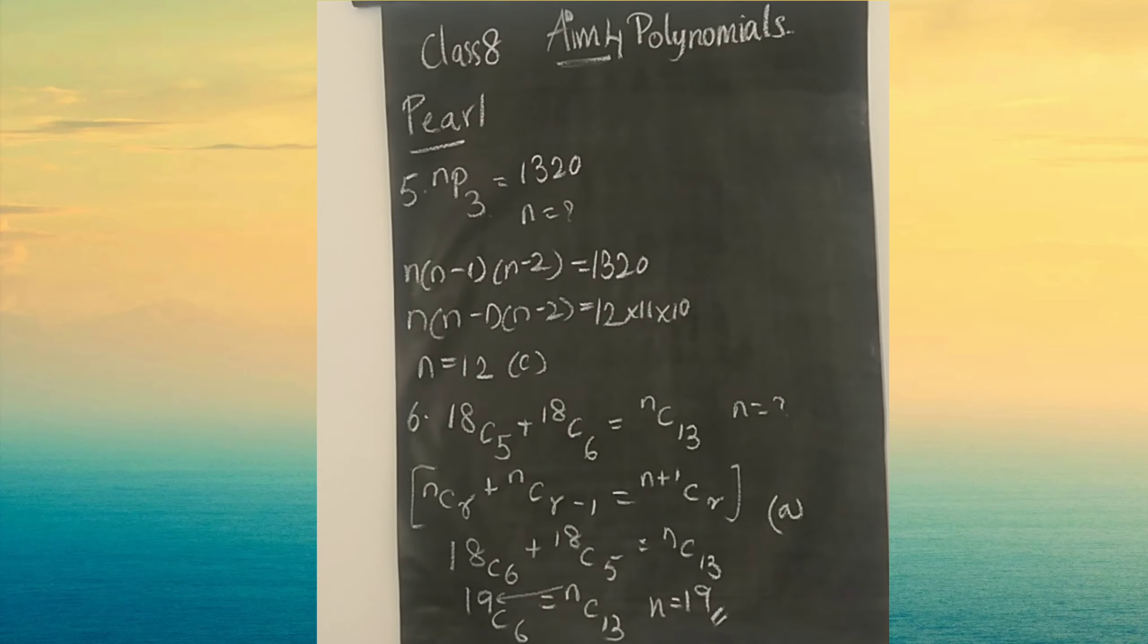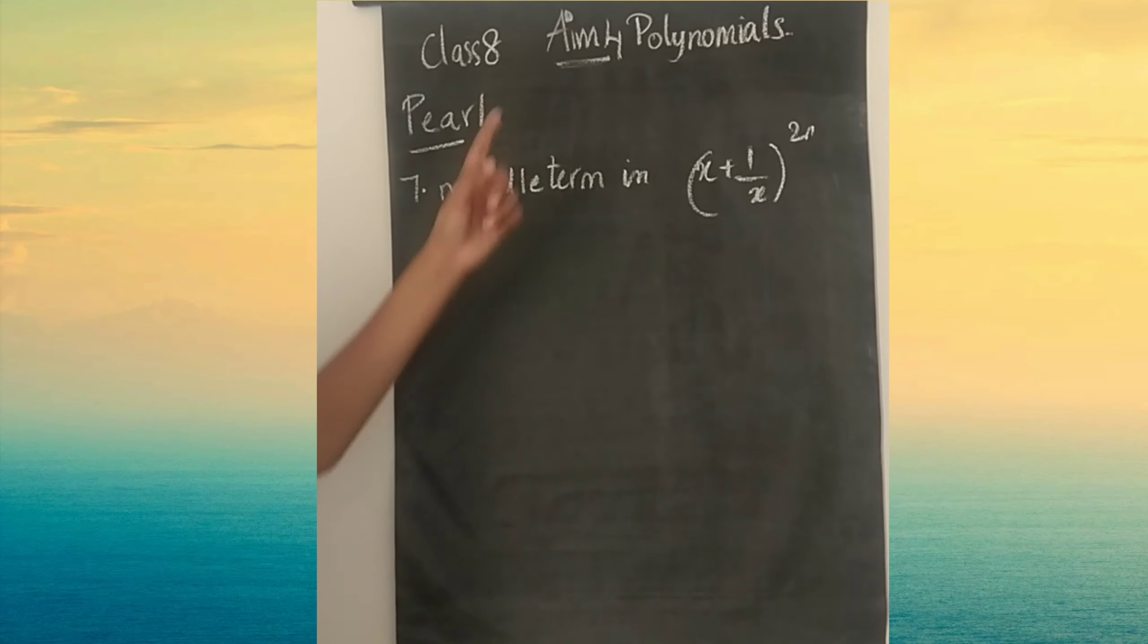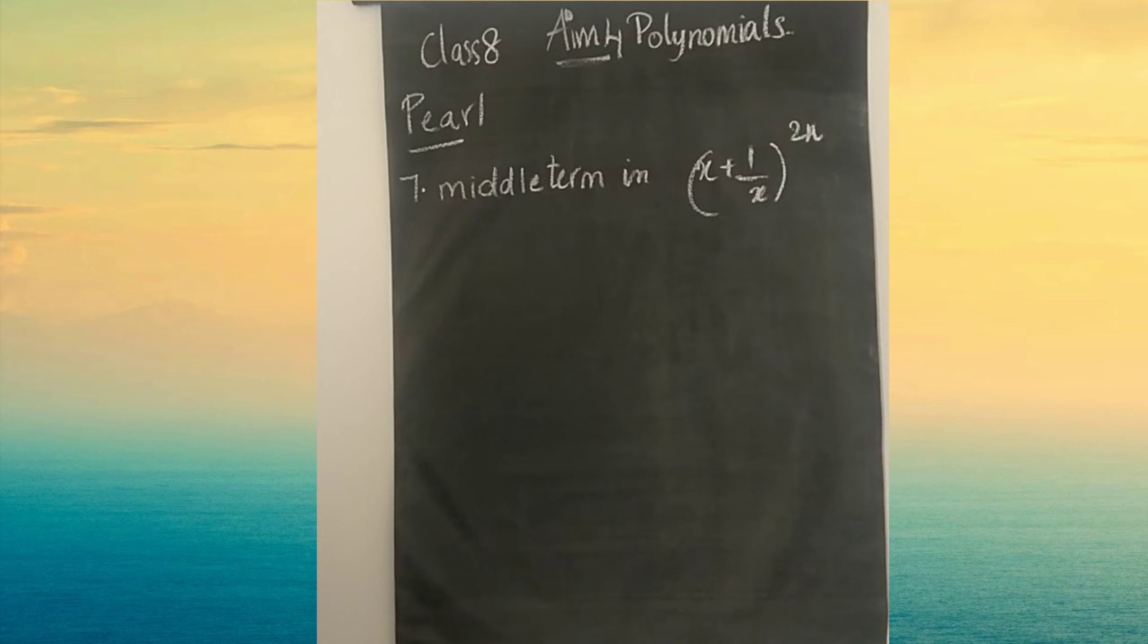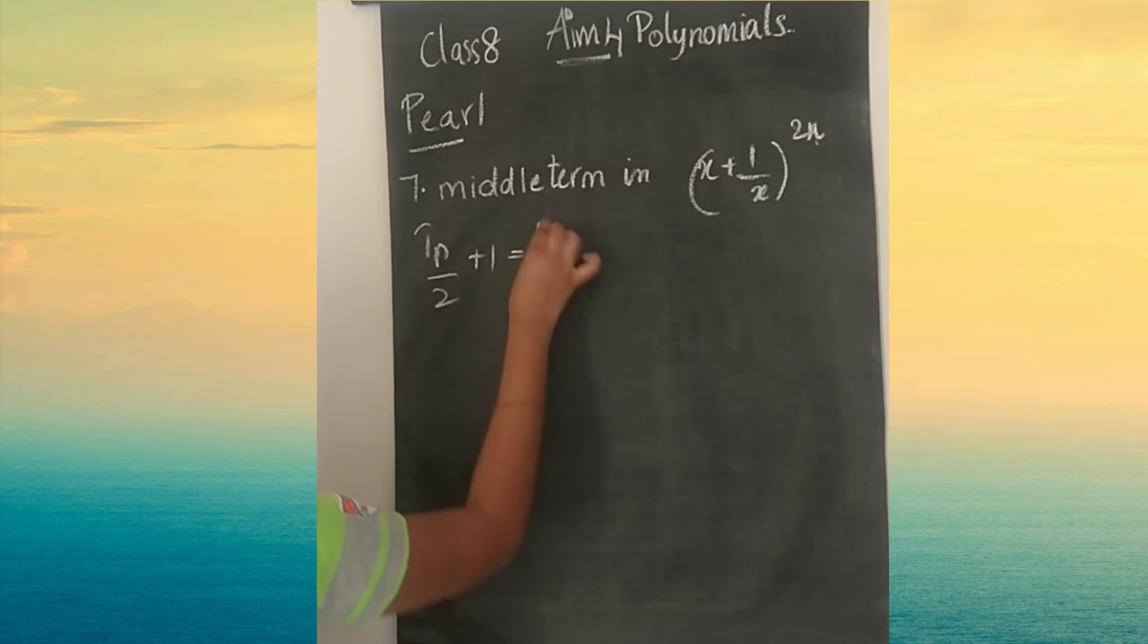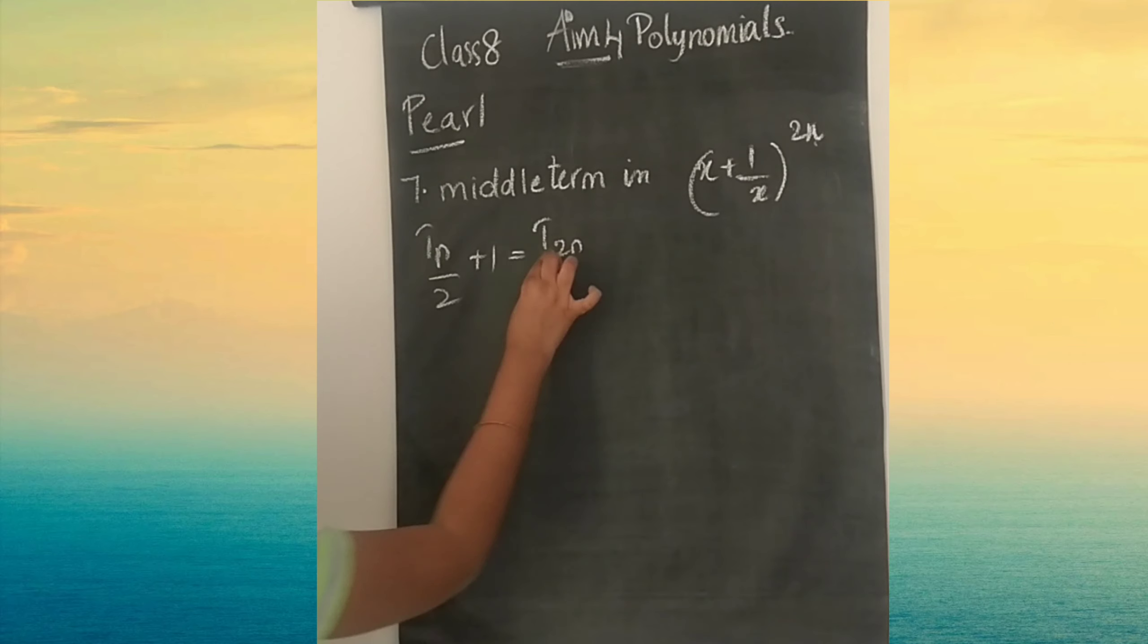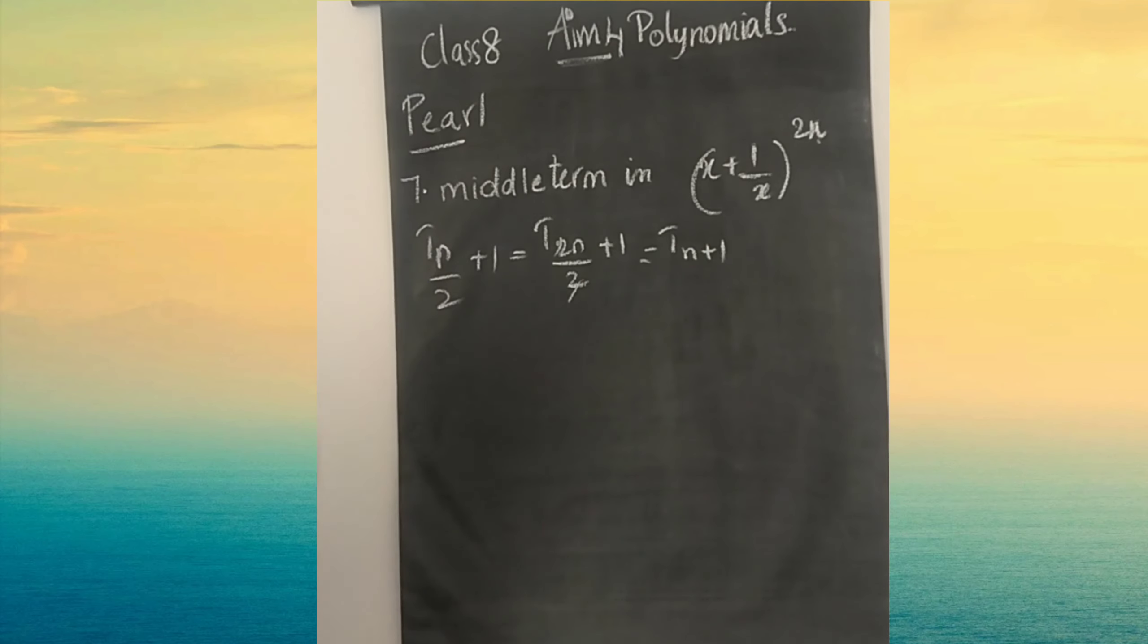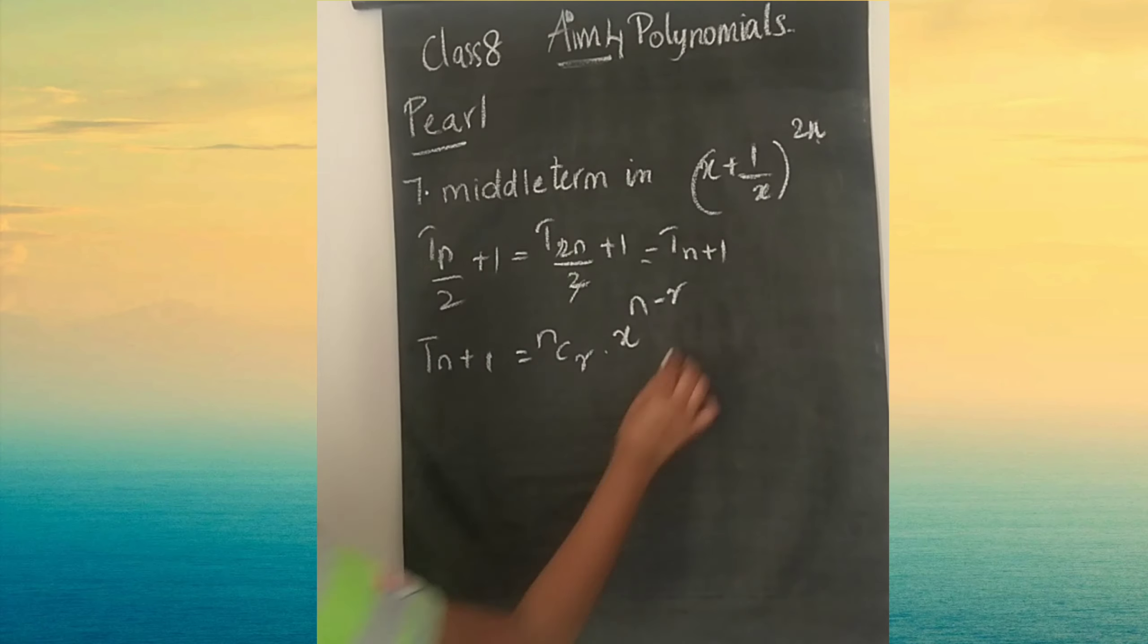Next question: we have to find the middle term in X plus 1 by X power 2N. We have to find the middle term by expanding it. The formula as we all know is T n by 2 plus 1. N is 2N, so T 2N divided by 2 plus 1. This 2 will get cancelled, then T N plus 1.